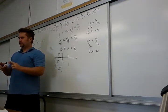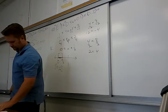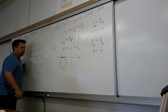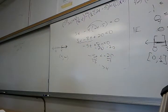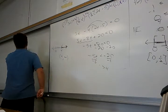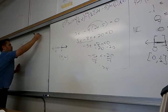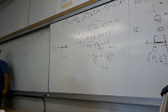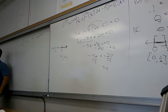A student asks about problem 59 on page 141. The instruction says 'solve by inspection,' which is a strange instruction to get in math class. Think about this: what does x squared represent? What kind of number is that going to be? No matter what you make x, if you square it...